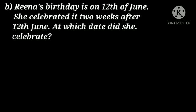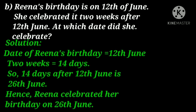Rina's birthday is on 12th June. She celebrated it 2 weeks after 12th June. At which date did she celebrate? Two weeks means 14 days, since 1 week equals 7 days. So Rina celebrated 14 days after 12th June. The date of Rina's birthday is 12th June; 14 days after 12th June is 26th June. Hence Rina celebrated her birthday on 26th June. Thank you.